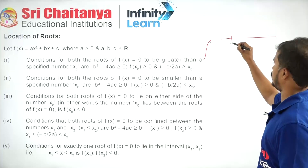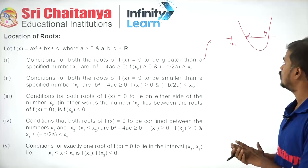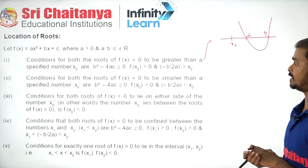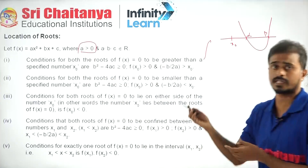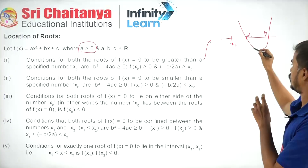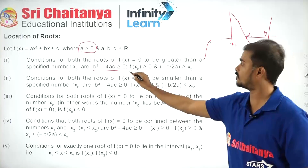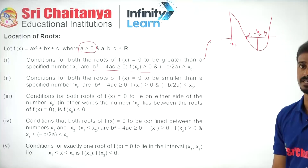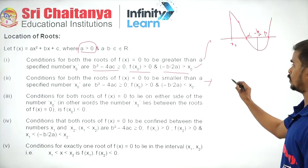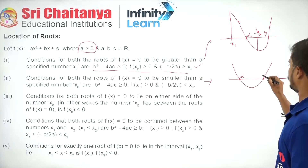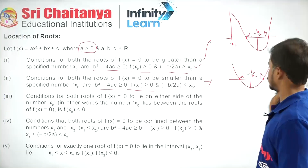The condition for both roots to be greater than a specified number x₀: the parabola opens upward, discriminant b² − 4ac ≥ 0, f(x₀) is positive, and the midpoint −b/2a (which is (α + β)/2) must be greater than x₀. Similarly, for both roots smaller than x₀: b² − 4ac ≥ 0, f(x₀) > 0, but −b/2a must be less than x₀.